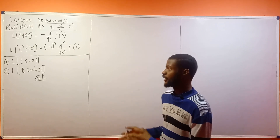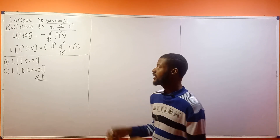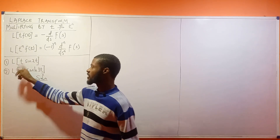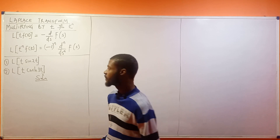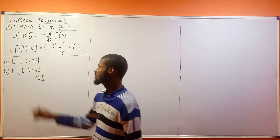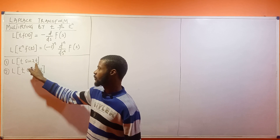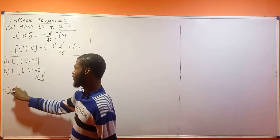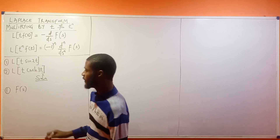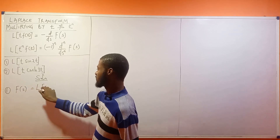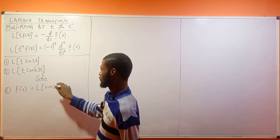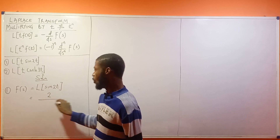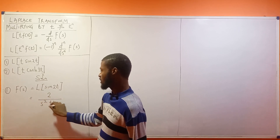With what we've learned in the previous video, these questions will be solved right now. What is the Laplace transform of t multiplied by sine 2t? The first thing you are concerned with is the Laplace transform of sine 2t, so F(s) is the Laplace transform of sine 2t, which gives us 2 over s squared plus 4.